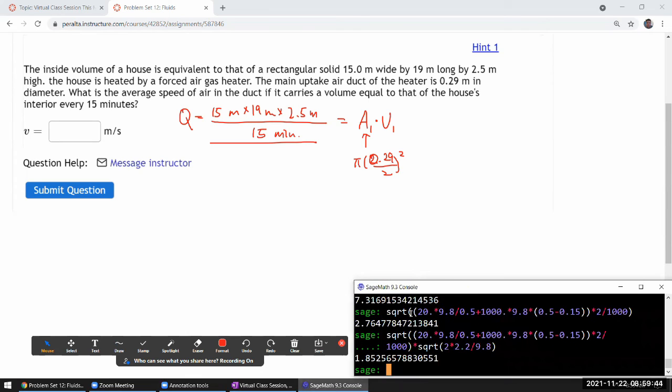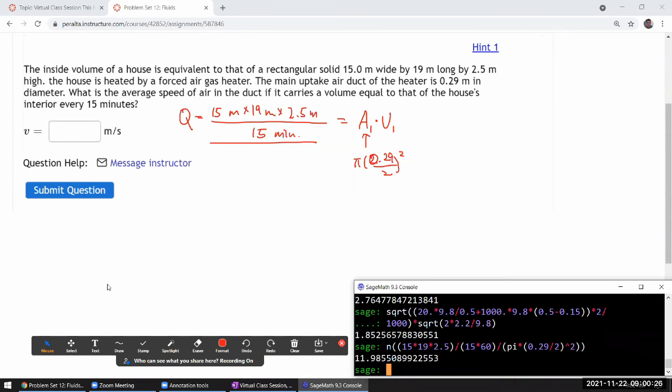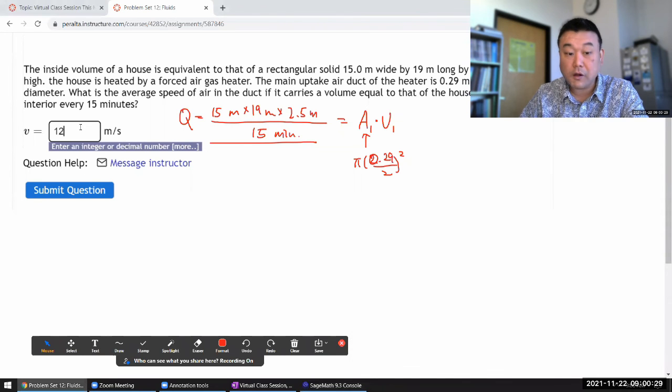So for v1, I can do it this way. I can say the only algebra in my head is going to be: 15 meter times 19 meter times 2.5 meter divided by 15 minutes—which is in terms of seconds you multiply by 60 to get the number in seconds. That's the left-hand side. You need to divide the whole thing by pi times 0.29 over 2 squared to get v1. And that should give me 11.99 or 12.0.